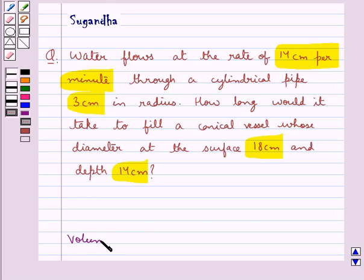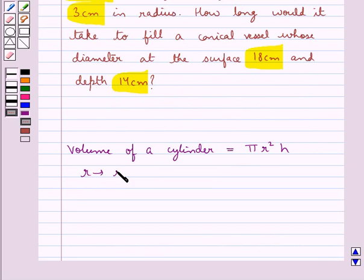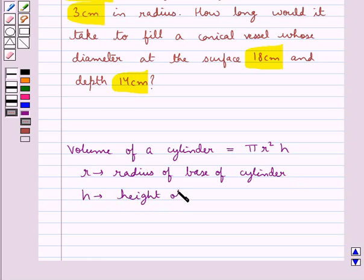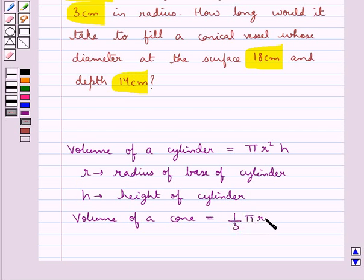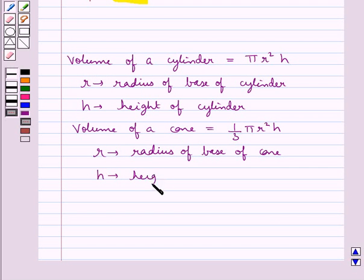We know that the volume of a cylinder is equal to pi r square h, where r is the radius of the base of the cylinder and h is the height of the cylinder. The volume of a cone is equal to 1 upon 3 pi r square h, where r is the radius of the base of the cone and h is the height of the cone. This is the key idea to be used for this question.